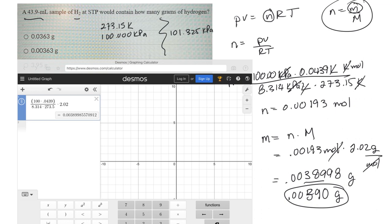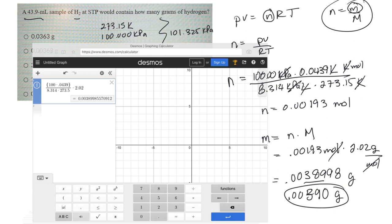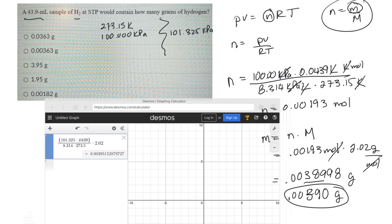Now, let me look at the answers. Looks like they don't have that. So let's try and use that other value for the standard pressure. So if I use 101.325, I come up with 395. And there's a 395 there, but it's not. I have 0.00395.